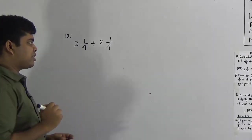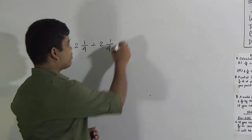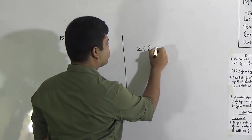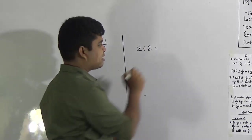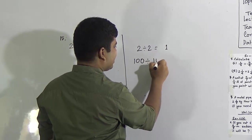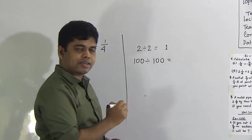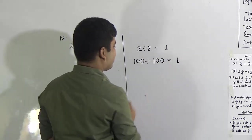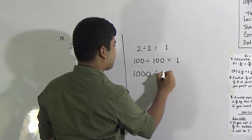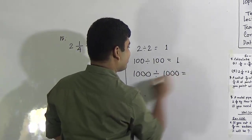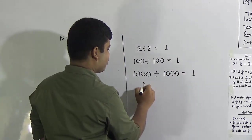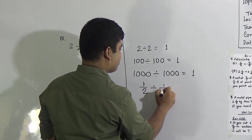Before solving, let me give an example. 2 divided by 2 equals 1. 100 divided by 100 equals 1. So any number divided by itself equals 1.